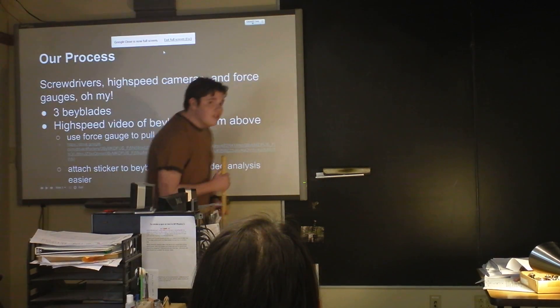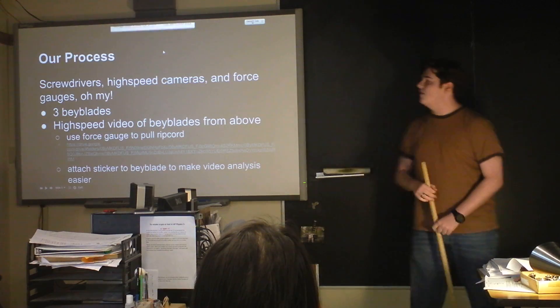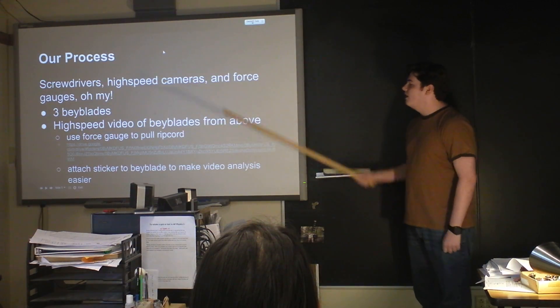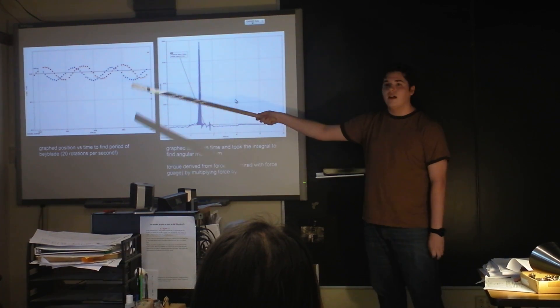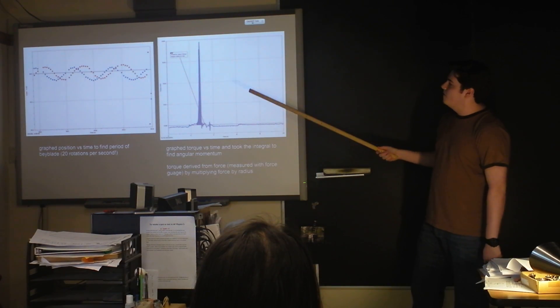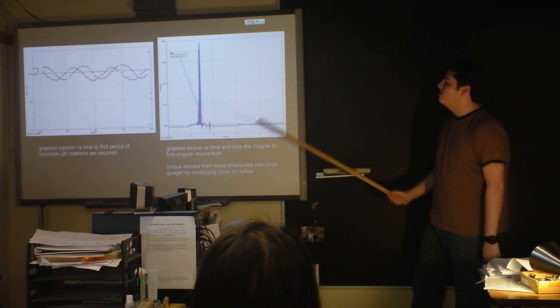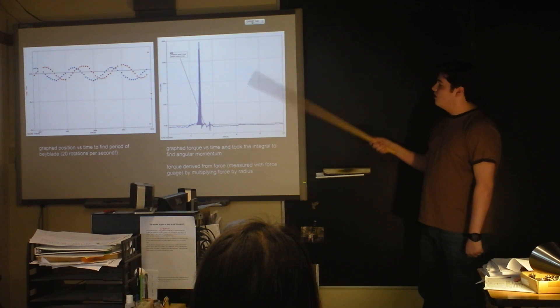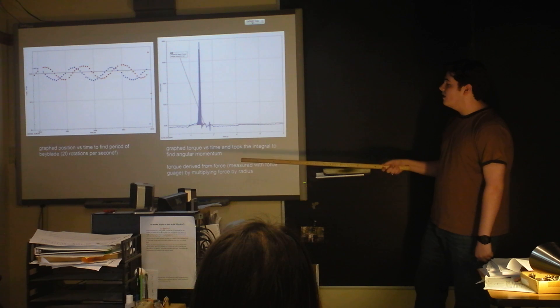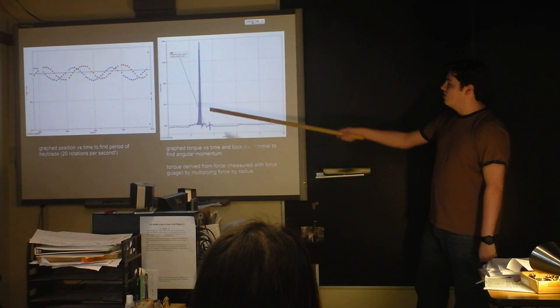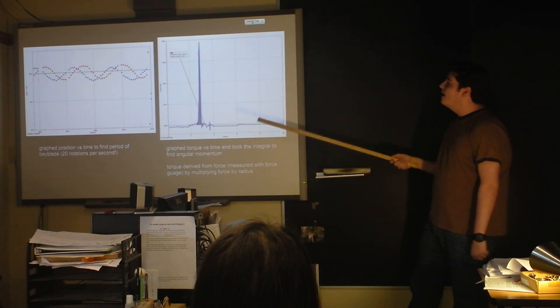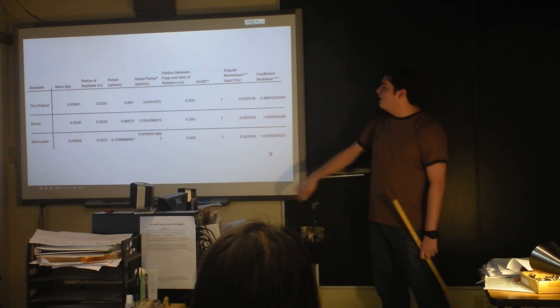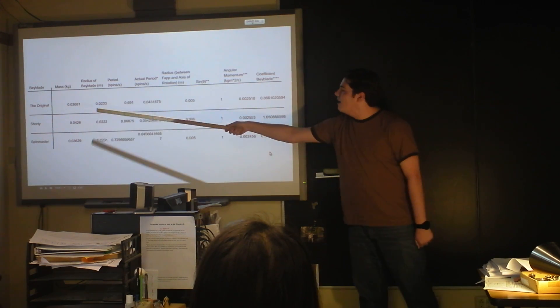So that's that video. So, we had a camera above, we had the force gauge for pulling it, and then we did video analysis, and that's the majority of what we did. So these are the graphs we got. Here's the position, so we can get the speed of it and the period. This is graphed on the x- and y-axis. This is specifically the sticker. Then we took the integral of torque, which is just finding the area under a graph. So this is the force sensor, and it goes really big. And then under there is how much force we put into it.